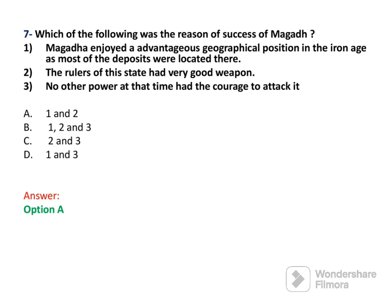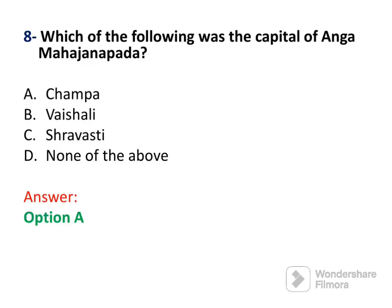The next question asks about the reasons for the success of Magadha. The first reason was its advantageous geographical position and the Iron Age. The second reason was that its rulers had very good weapons and no one had the courage to attack it. The answer is option A — reasons one and two, because the Iron Age and strategic position made Magadha successful.